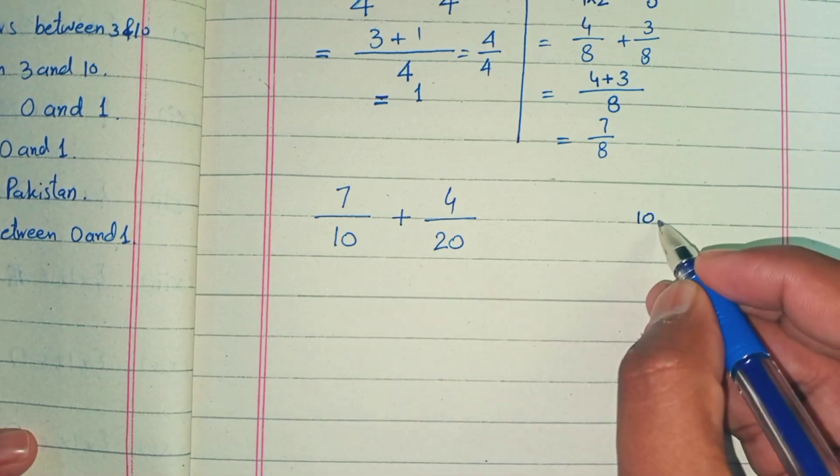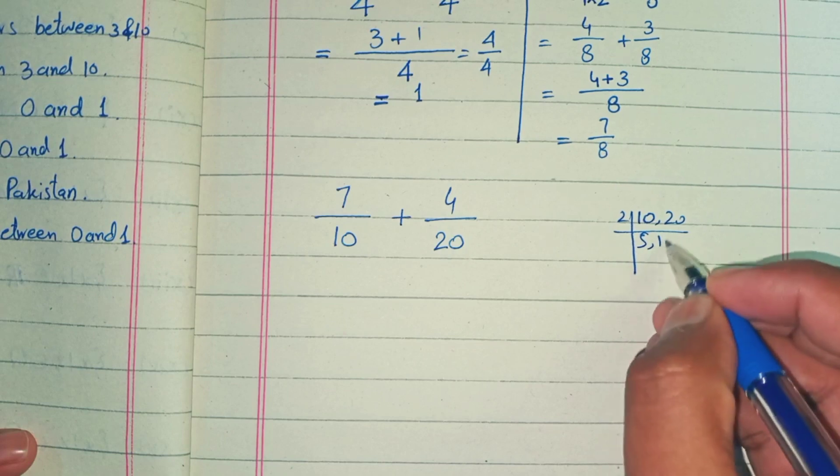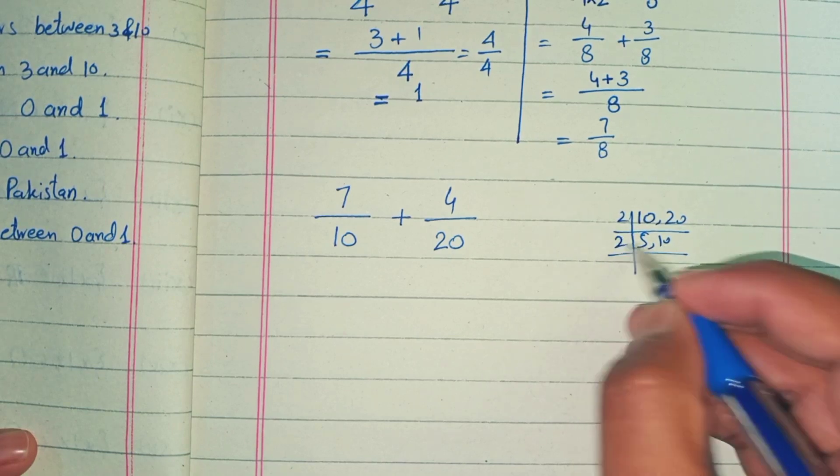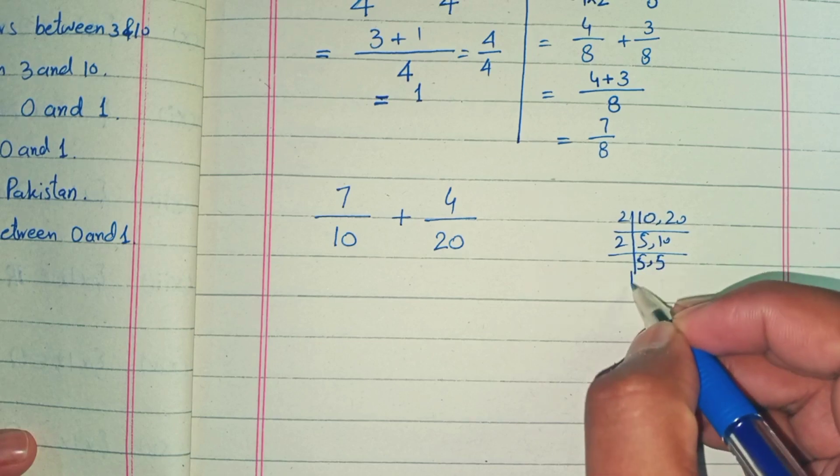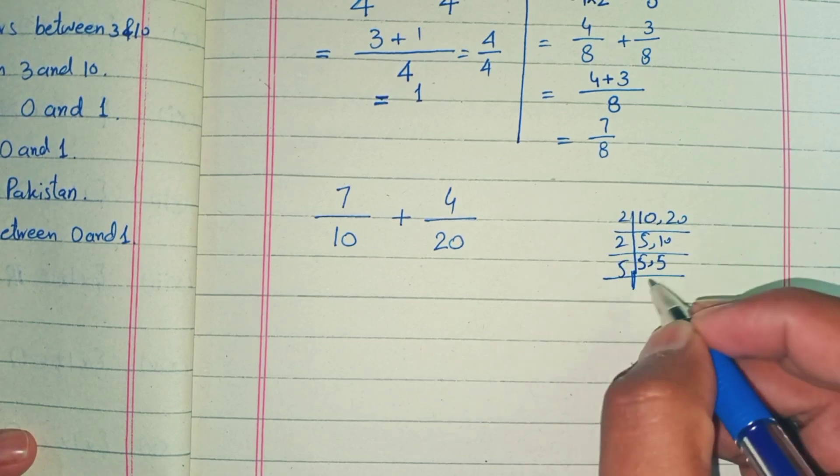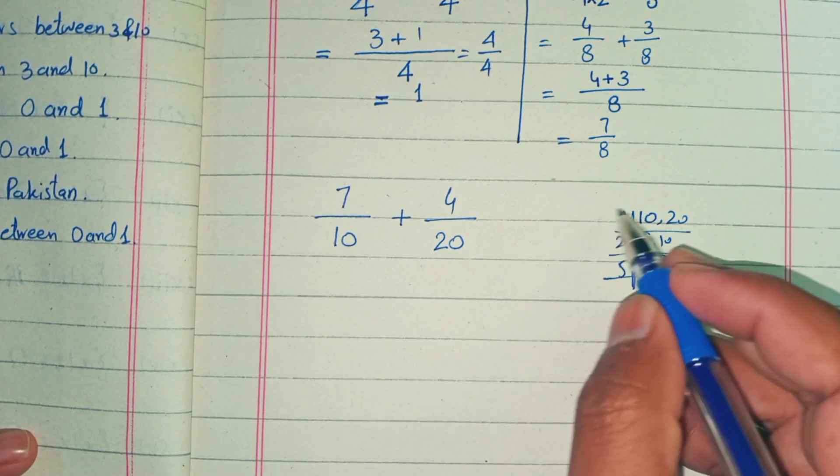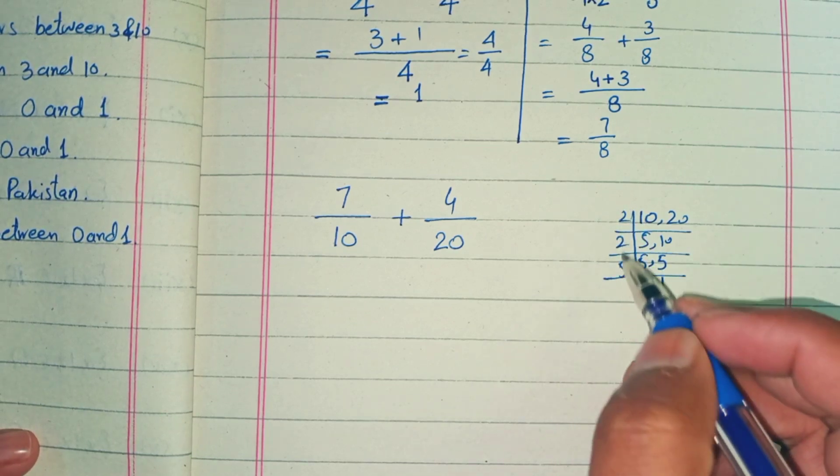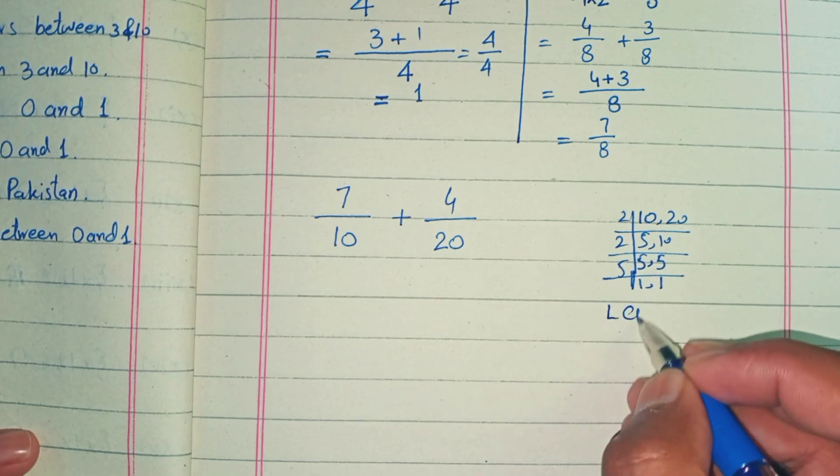You know how to take the LCM of 10 and 20. Two fives are 10, two tens are 20. We divide by 2, getting 5 and 10, then divide by 2 again, getting 5 and 5, then divide by 5. We multiply these factors: 2 times 2 equals 4, and 4 times 5 equals 20. So our LCM is 20.